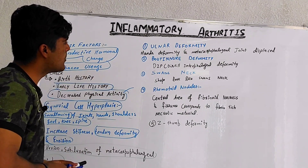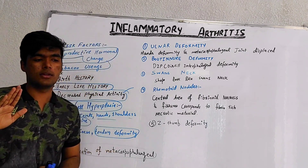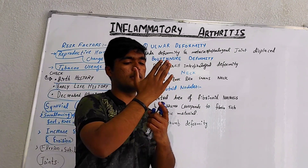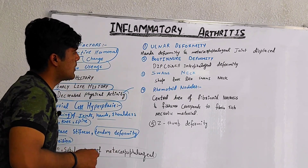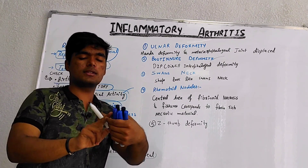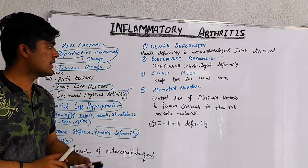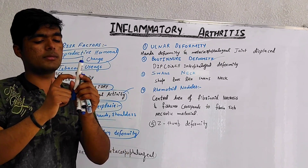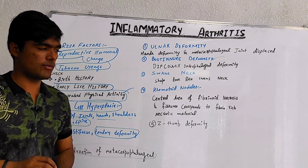We have different types of deformities. The first deformity is ulnar deformity — where the hand slightly changes shape and deformity occurs in the ulnar direction. Second is boutonniere deformity, which is basically a distal interphalangeal joint deformity where the finger shape changes and it moves towards the side. Swan's neck deformity is where the finger shape looks like a swan's neck.